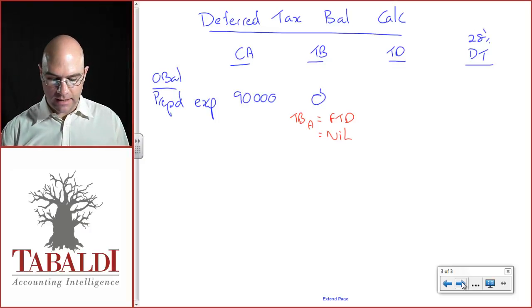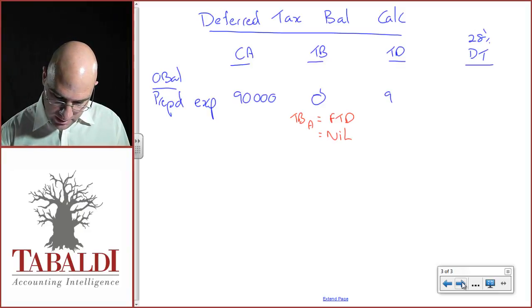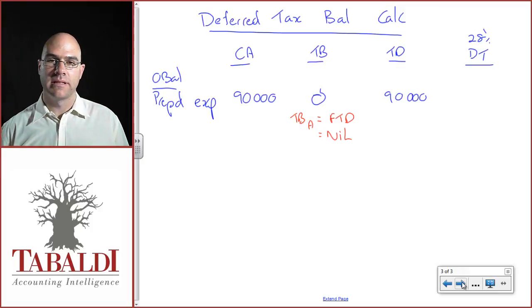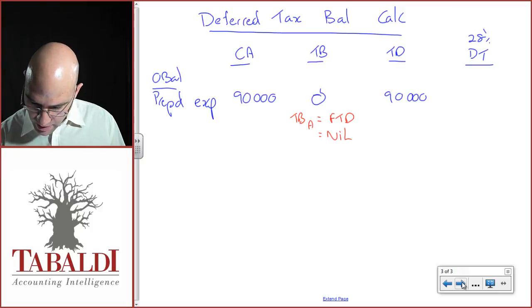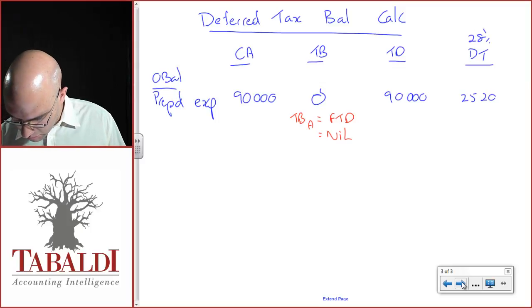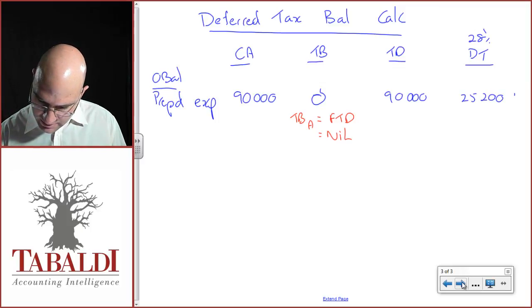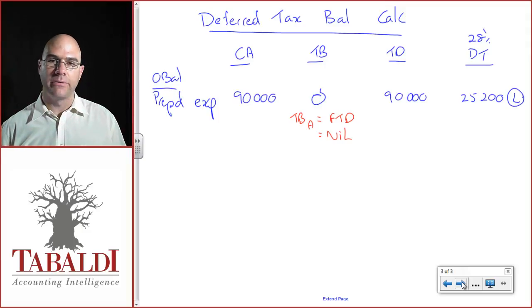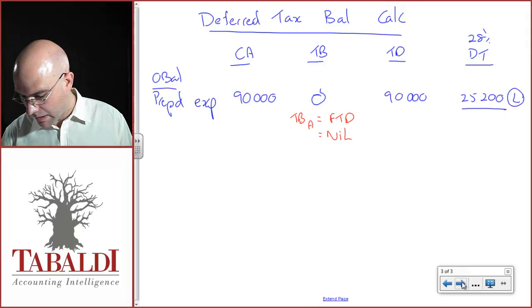Future benefit of 90 less zero future tax deductions gives me a 90,000 taxable temporary difference, which will give rise to a 25,200 deferred tax liability, a future tax payment.